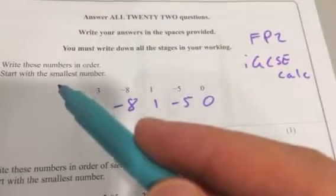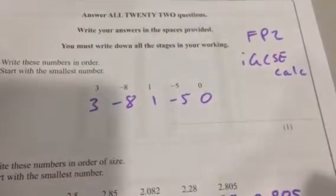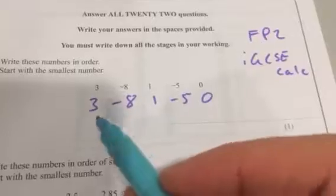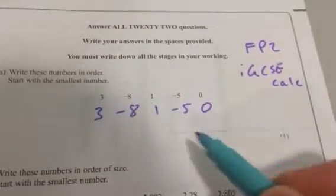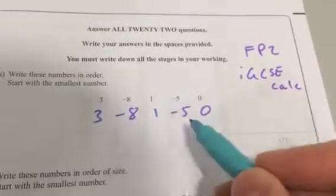And we're going to order the numbers starting from smallest. We've got 3, minus 8, 1, minus 5, 0. We'll start with the smallest number. We'll put the negatives, so minus 8, minus 5.